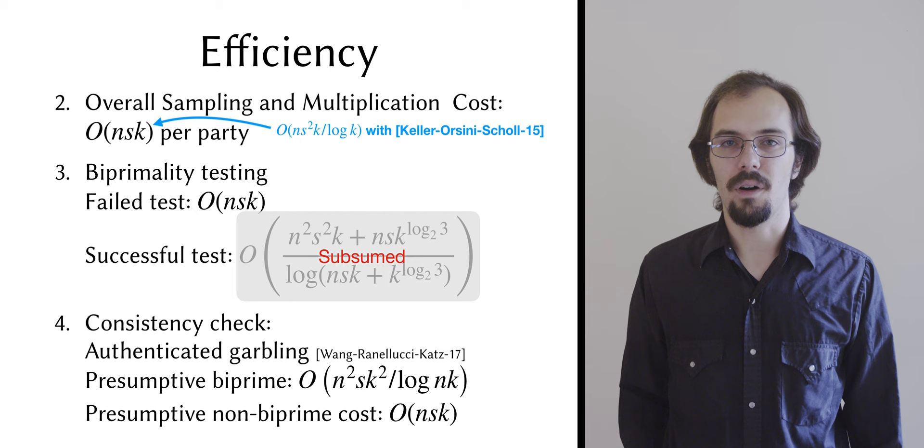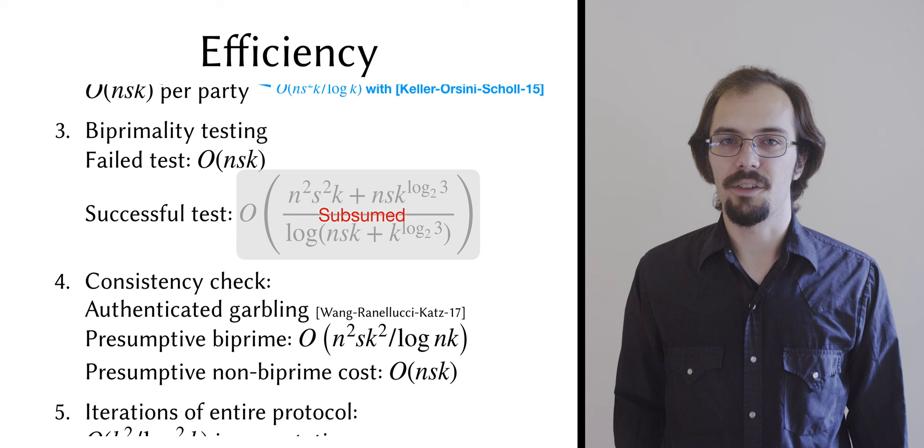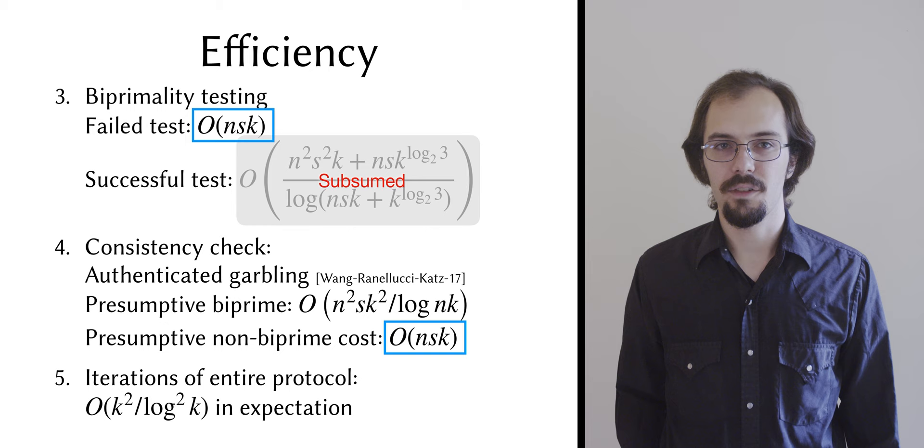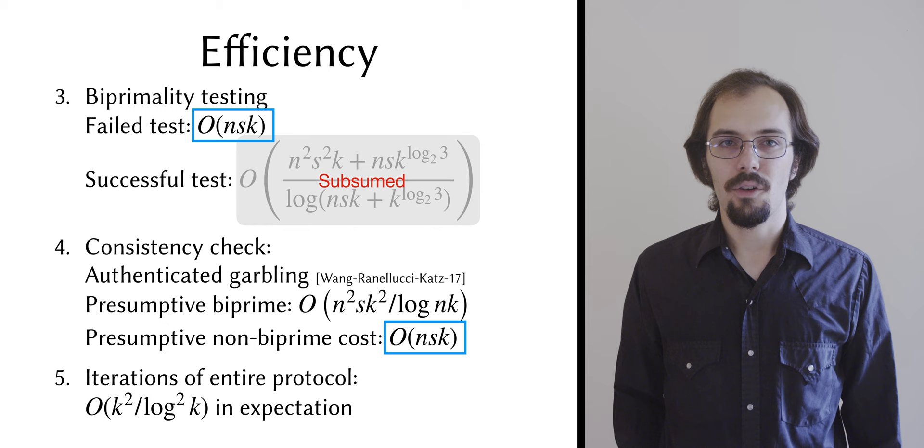If we repeat the whole protocol until a success occurs, we need O of k squared over log squared of k repetitions in expectation, which follows from Bonet and Franklin's theorem. All but one of these repetitions will be failures, so we pay the smaller cost for both the biprimality test and the consistency check. And only in the last repetition do we pay the larger costs.